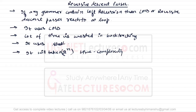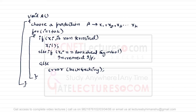I'll explain it with a simple example — I'll take a simple algorithm first and then an improvised version of that algorithm. The algorithm is like this: here the function A is called and we choose a production from all productions x1, x2, x3, x4, and so on. If that production xi is a non-terminal, we call that particular variable. Else if xi matches a lookahead symbol, we increment the input pointer and perform a match; otherwise we report an error and do backtracking. This is a generalized pseudocode format.